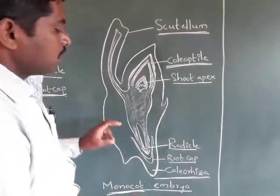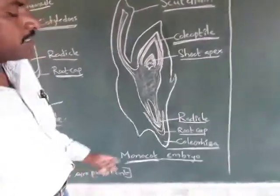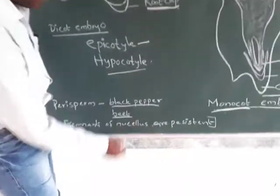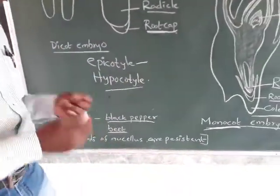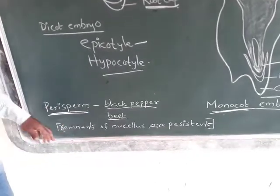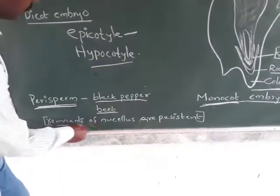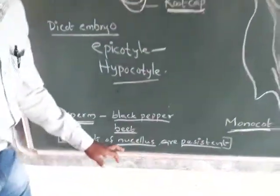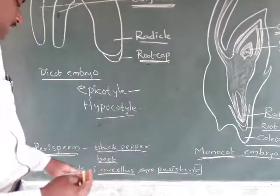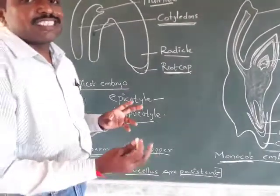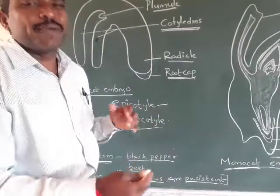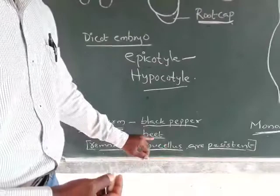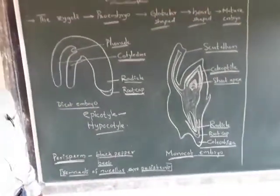This is about the monocotyledonous embryo. In some seeds like black pepper and beet, there is a perisperm — the remnants of the nucellus that are persistent. This residual nucellus is called the perisperm, which occurs in black pepper and beet. This concludes our discussion about the embryo.